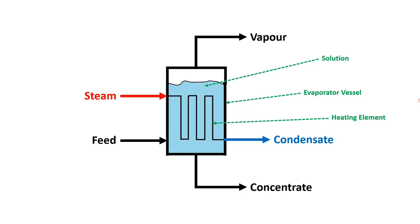Now that we understand the basic principles behind evaporation, we can look at how evaporators work in more detail. Here we have a simple example of an evaporator containing a solution being heated by a heating element. The cold feed solution is pumped into the evaporator and heated. Typically, low pressure steam is used in most industrial applications to heat the solution.